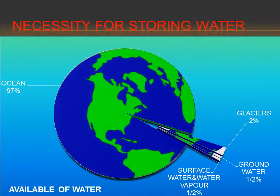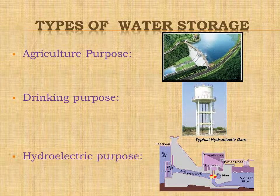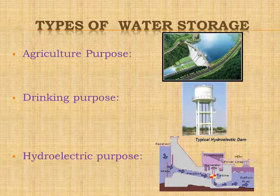The largest amount of water on Earth — about 97% — is stored in oceans. The next largest amount — about 2% — is stored in glaciers and polar ice caps. A little more than half of the remaining 1% is stored underground as groundwater. The remaining fraction is stored in lakes, rivers, and as water vapor in the atmosphere. Types of water storage include agricultural dams, drinking water tanks, and hydroelectric reservoirs.